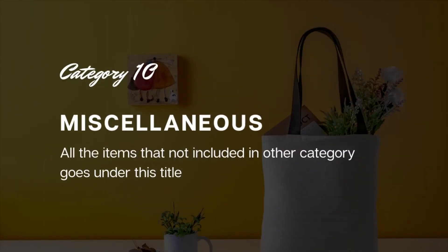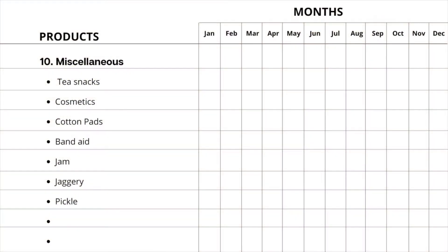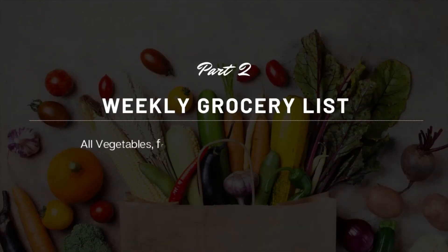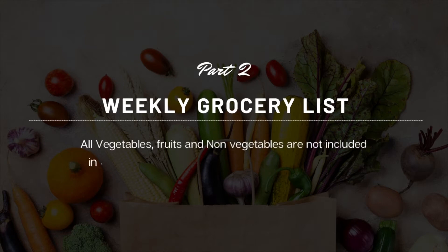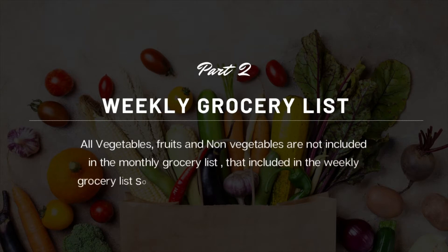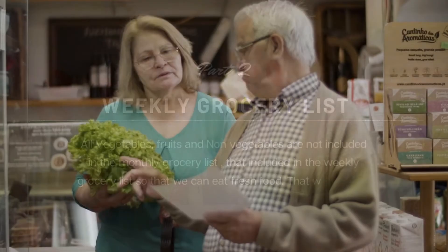The final category is miscellaneous — all the items not included in the other categories go under this title. Now moving to the second part of list making, which is the weekly grocery list. All vegetables, fruits, and non-vegetables are not included in the monthly grocery list; they are included in the weekly grocery list so that we can eat fresh food. It can be prepared weekly based on a meal plan.